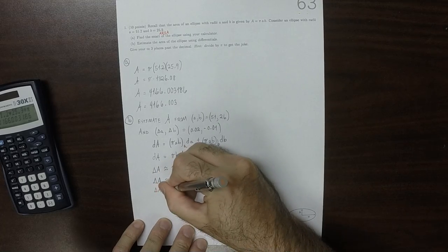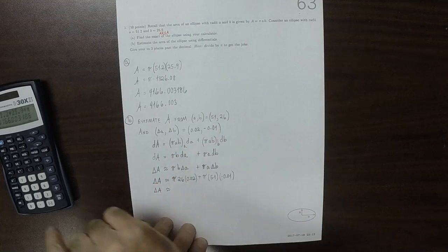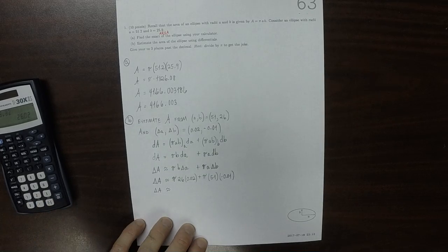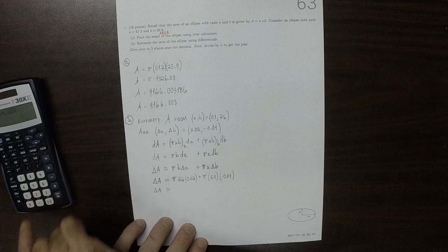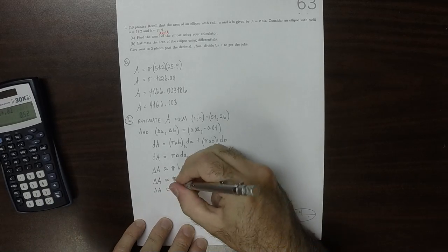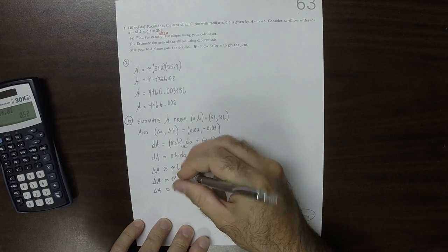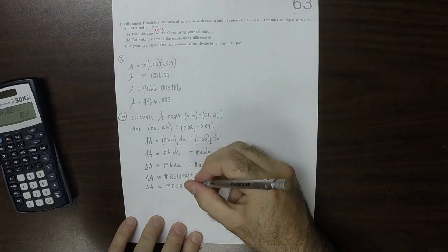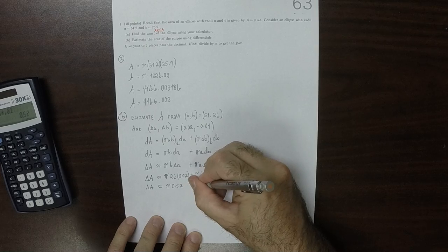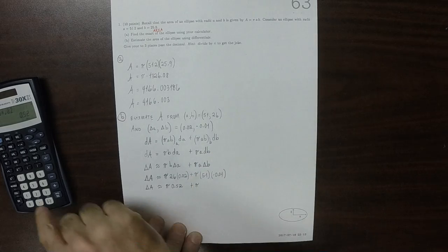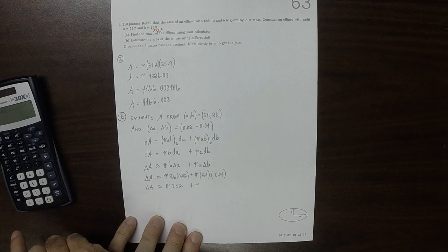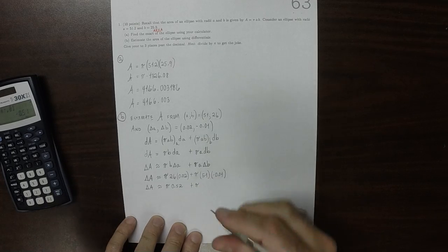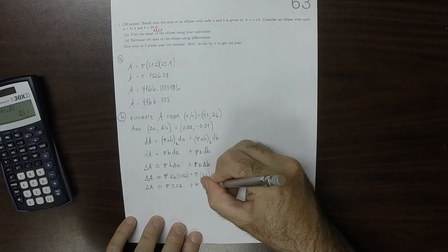So ΔA is approximately π times 26 times 0.02, and then plus π times 51 times negative 0.01, which is negative 0.51.